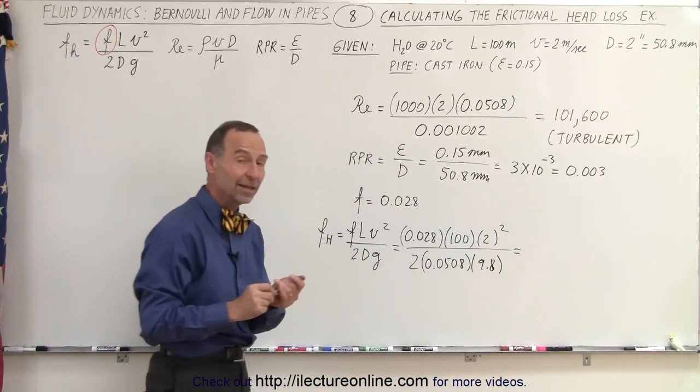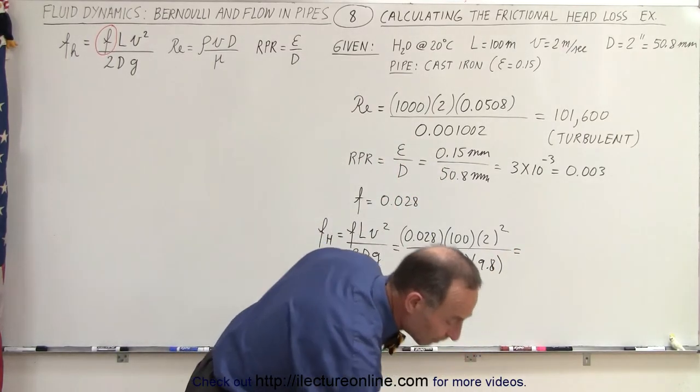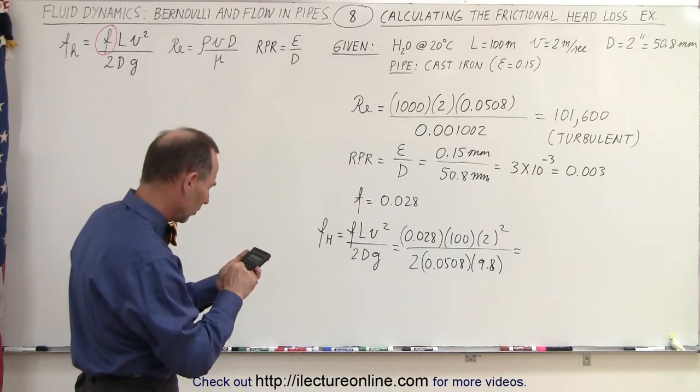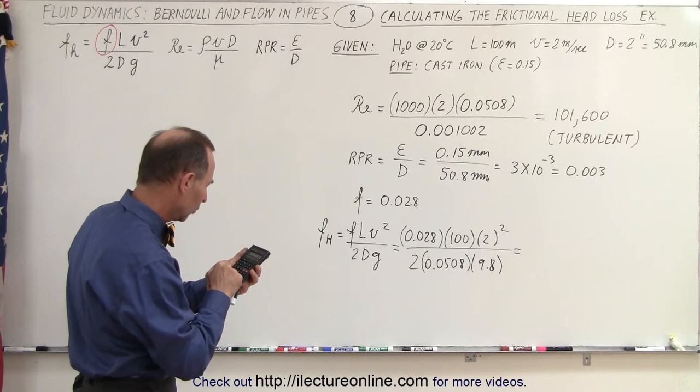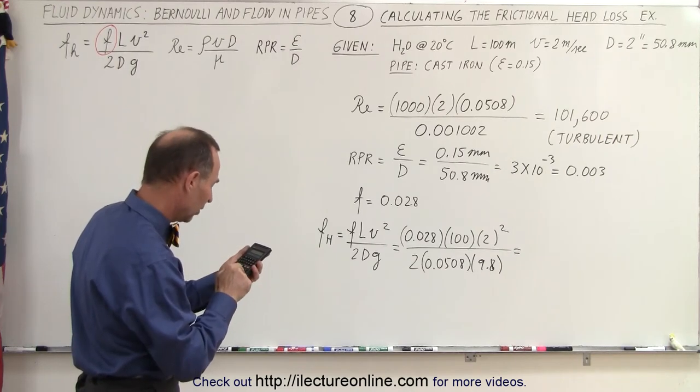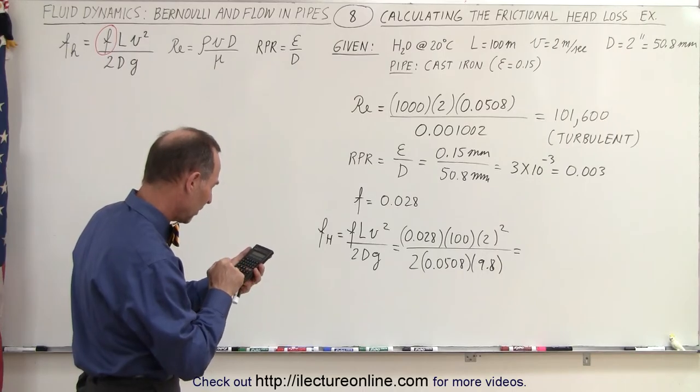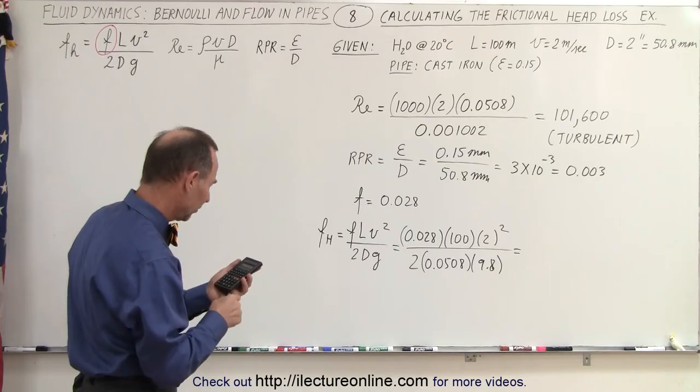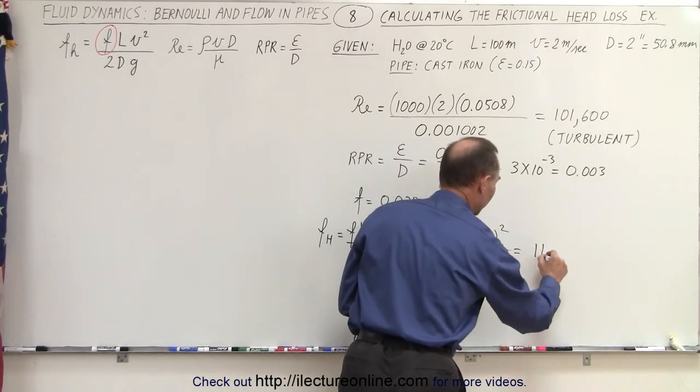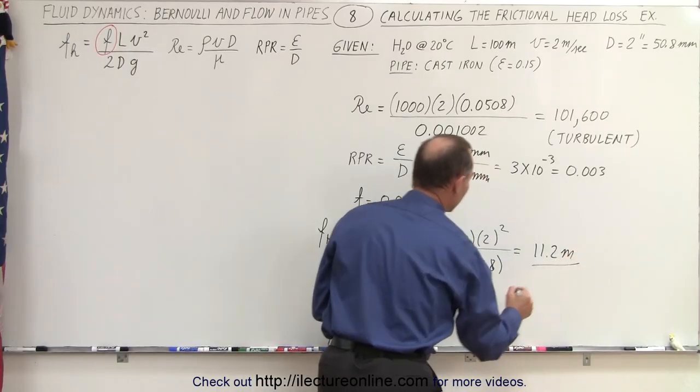Let's see what kind of friction head loss we're going to find. So 0.028 times 100 times 4 divided by 2 divided by 0.0508 and divided by 9.8 equals, so I end up with 11.2 meters.